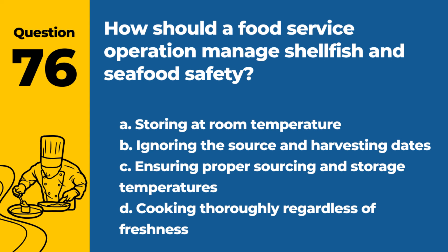Question 76. How should a food service operation manage shellfish and seafood safety? a. Storing at room temperature. b. Ignoring the source and harvesting dates. c. Ensuring proper sourcing and storage temperatures. d. Cooking thoroughly regardless of freshness. Answer: c. Ensuring proper sourcing and storage temperatures. Proper handling of shellfish and seafood is crucial for safety.